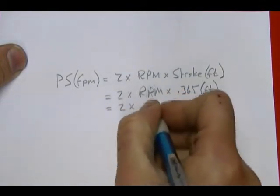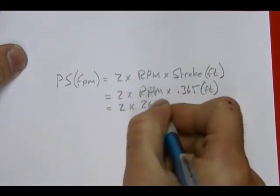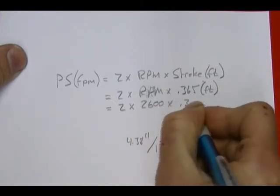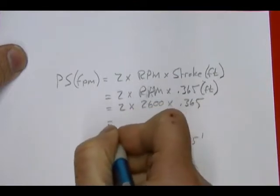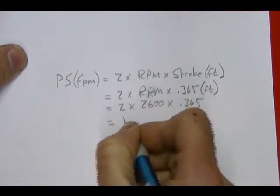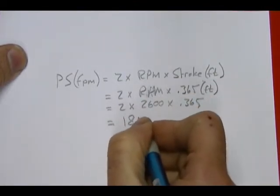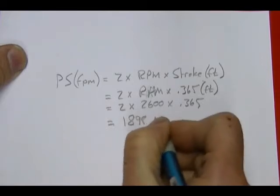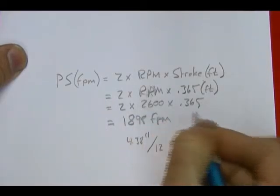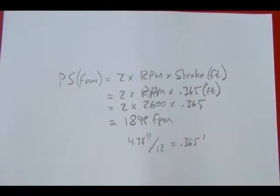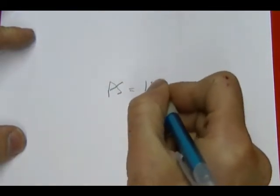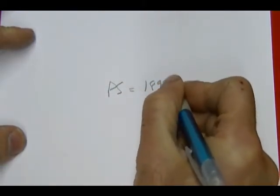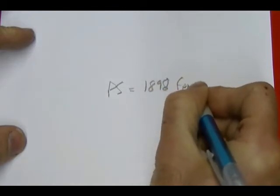So 2 times 2,600 times 0.365 is equal to 1,898 feet per minute. Now I know that the piston speed is equal to 1,898 feet per minute.